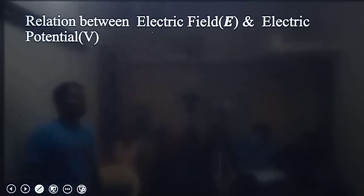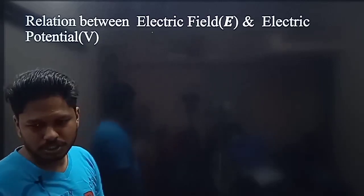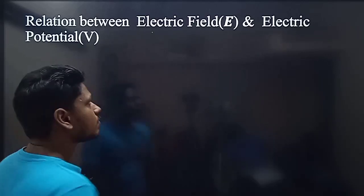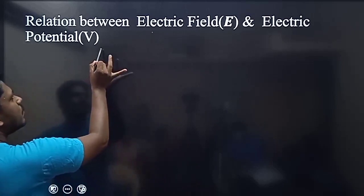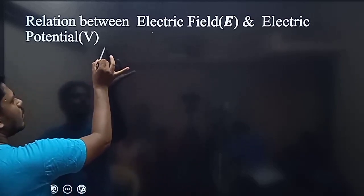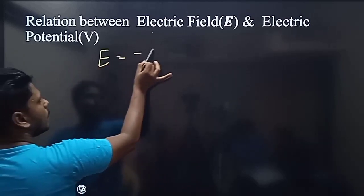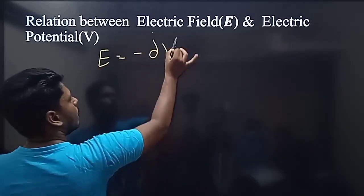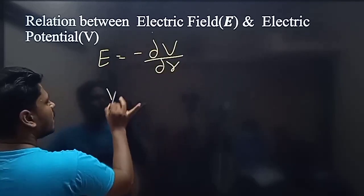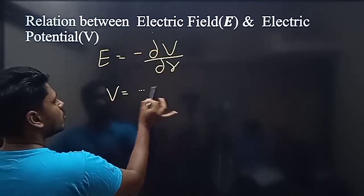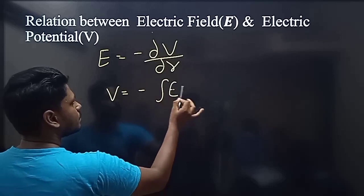Relationship between electric field and electric potential. Electric field formula: E is equal to... V is equal to minus integral of...